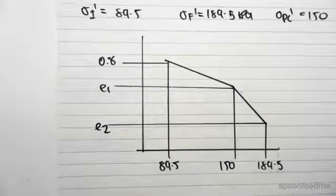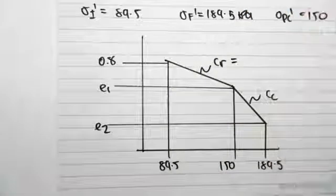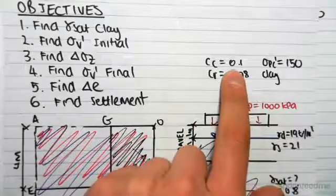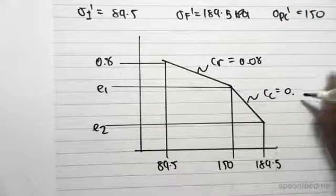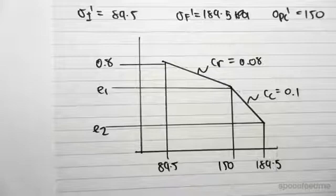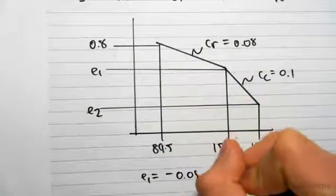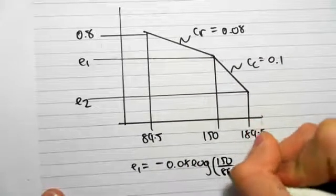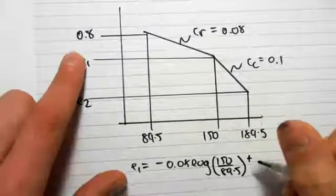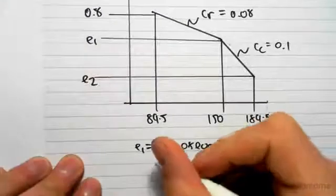So this would be cr and this would be cc. We know cr equals 0.08 and cc equals 0.1, so 0.08 and this is 0.1. So we can find e1 would equal minus 0.08 log of the final, so that would be 150 over 89.5, the initial, plus the initial void ratio plus 0.8. If we were to work this out, we would get 0.78.